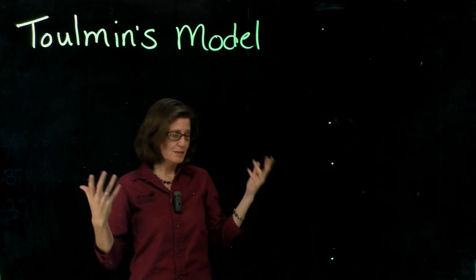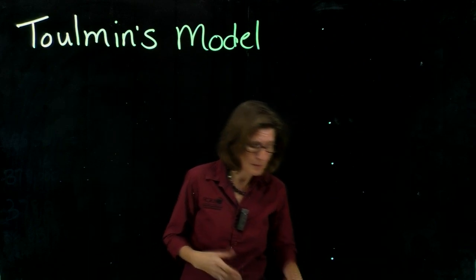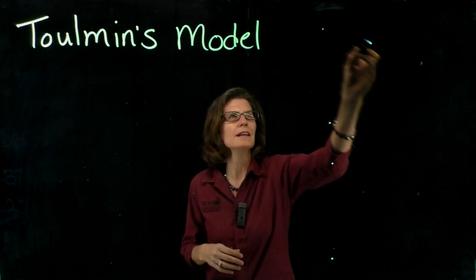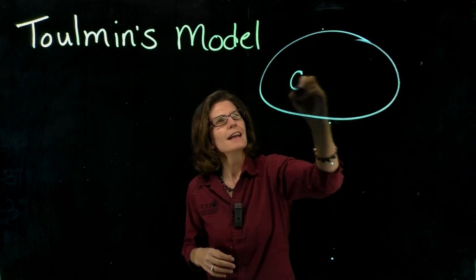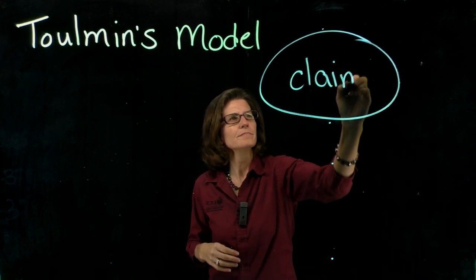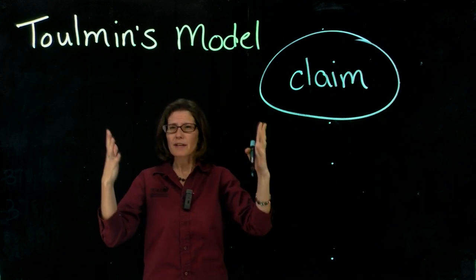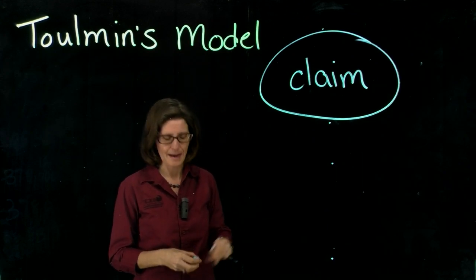According to Toulmin's model, when you have a position, an opinion that you want to deliver to your audience, the first thing you want to think about is naming that, and that is called a claim. So the claim is the position, the opinion that you have, the idea that you want your audience to accept.